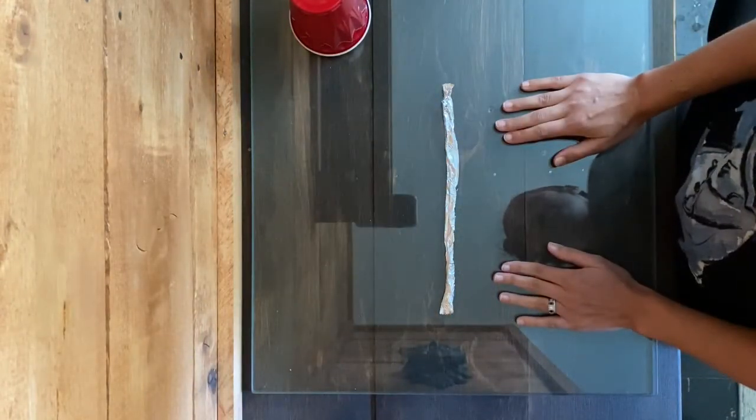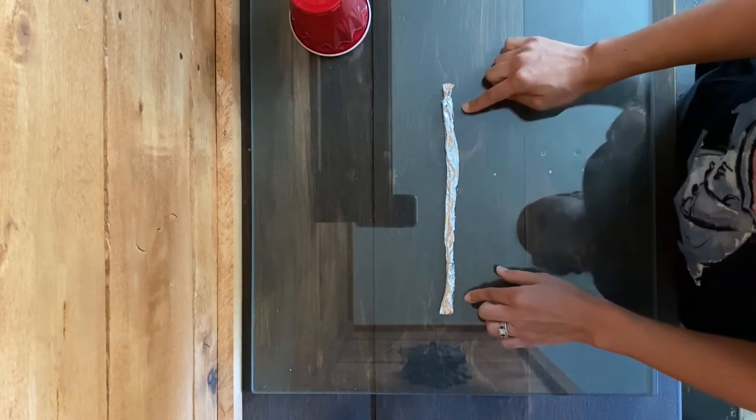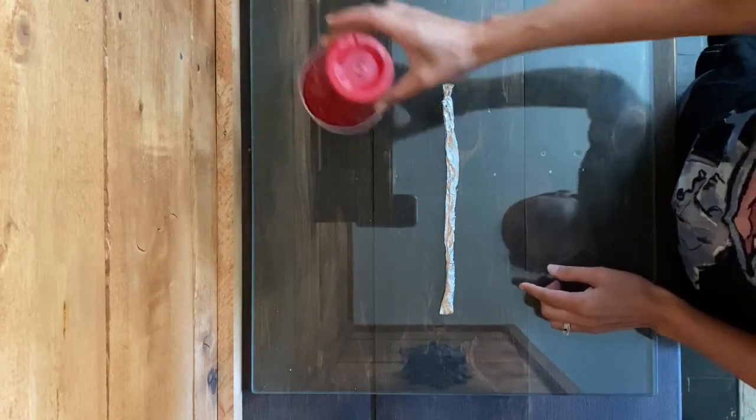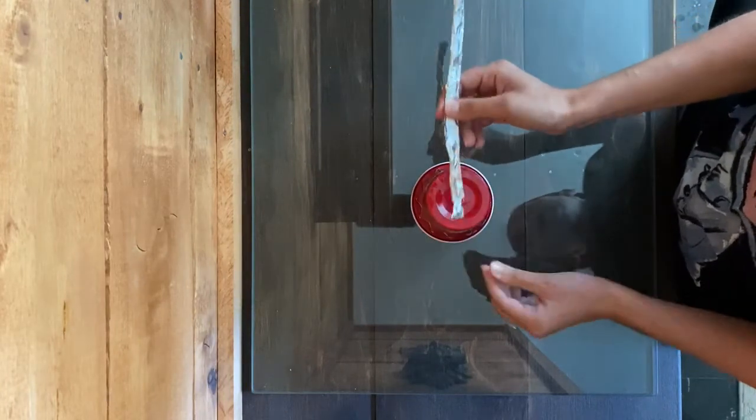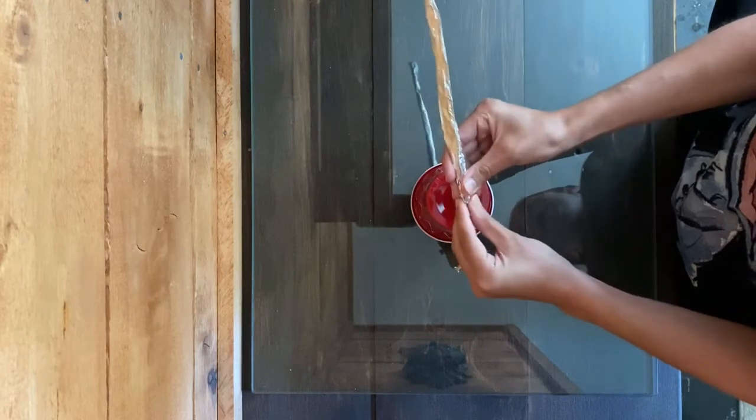Now that we've rolled our tinfoil into a long, thin shape, we have to see if it will fit into the hole that we've previously made in our cup. If it doesn't, we'll need to make it smaller to get it to fit.